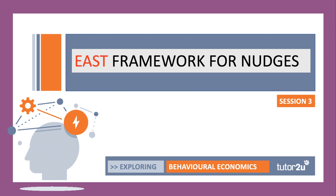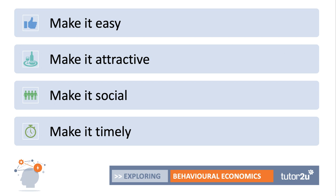Welcome to the second video in our third lesson of six on behavioral economics. We introduced the concept of nudge and choice architecture in the first video. I want to take you through the EAST framework for nudges — EAST is a nice acronym for thinking about the kinds of nudges that might work in changing people's behavior. EAST stands for: make it Easy, make it Attractive, make it Social, and make it Timely.